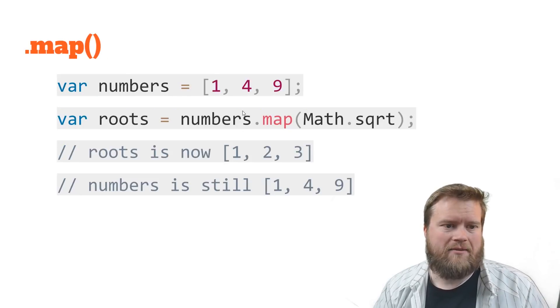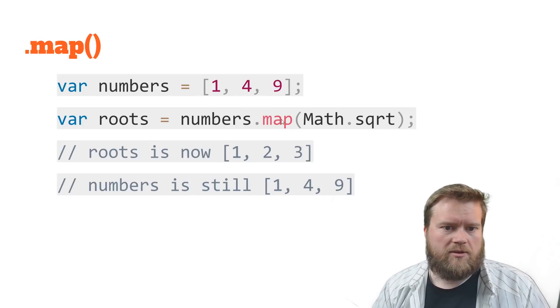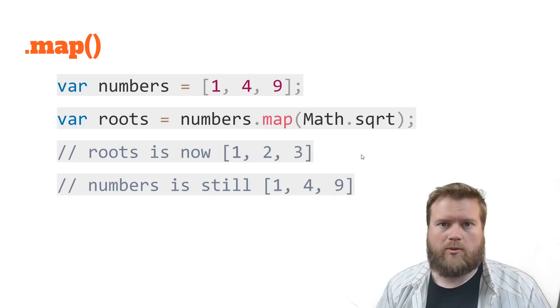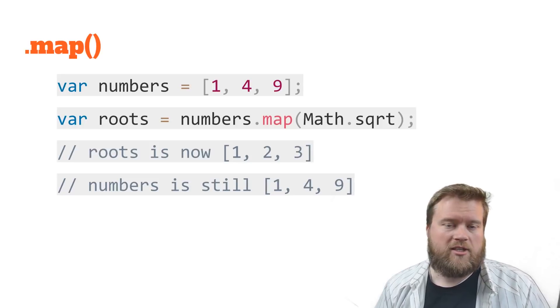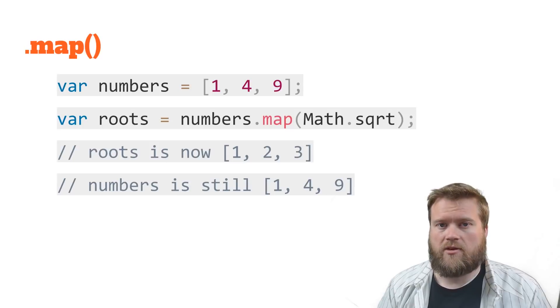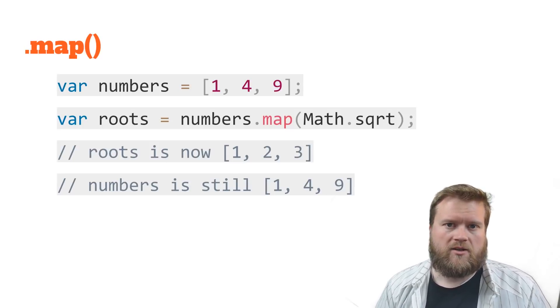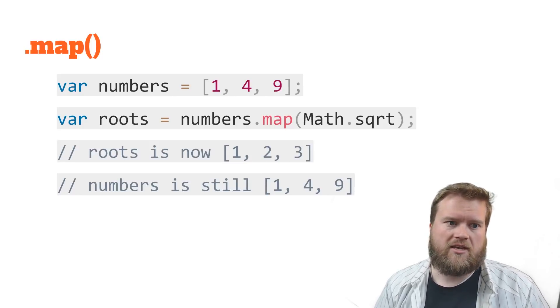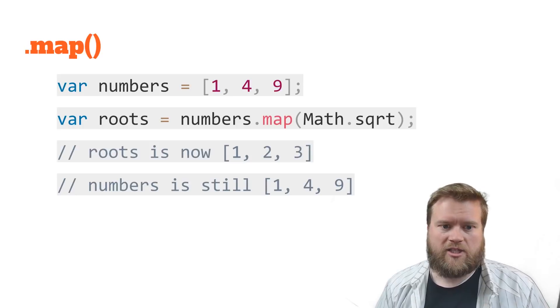Next one is map. So in map, we can do this. Let's say we have numbers 1, 4, 9. We can do numbers.map, math.square root. And what map does is instead of filtering something out where we're taking out things, we're actually going through every single value and then we're doing something to it.